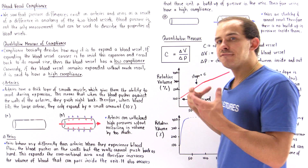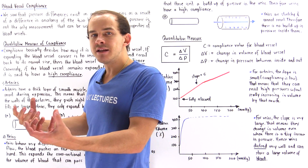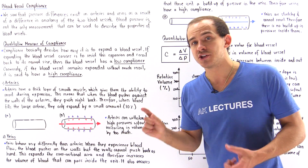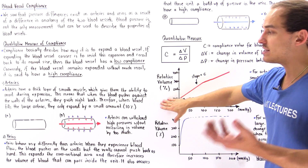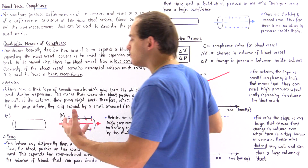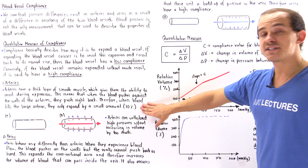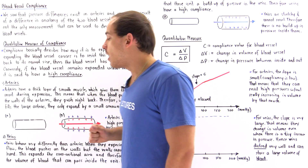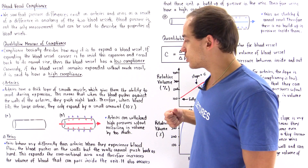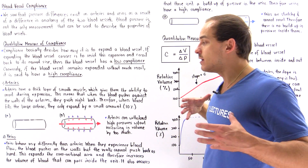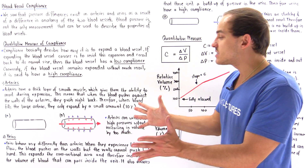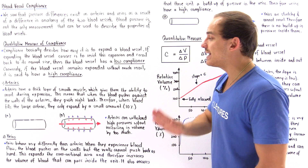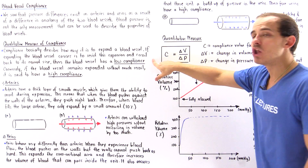Therefore, when the blood fills these arteries and tries to expand them, the expansion doesn't actually take place, or only a very small percentage of expansion actually takes place. For relatively large arteries such as our femoral artery, it only expands by about 10%. In diagram A we have the relaxed state of our artery, and when blood actually fills the artery, the fluid pushes against the walls but the walls push right back, so it expands only by a tiny amount. That means that arteries have a low compliance.